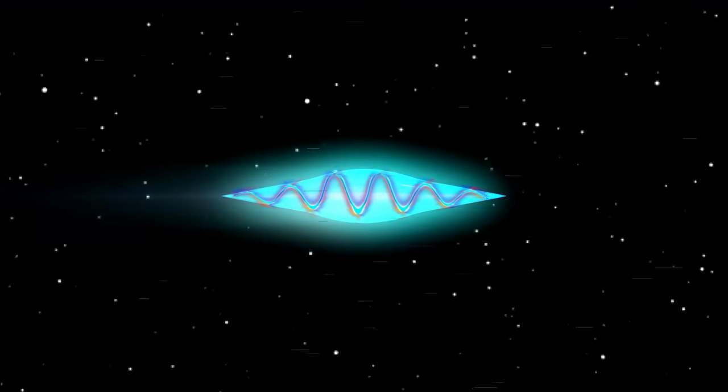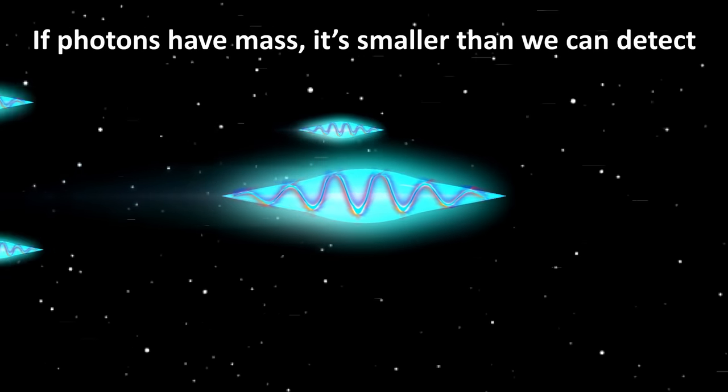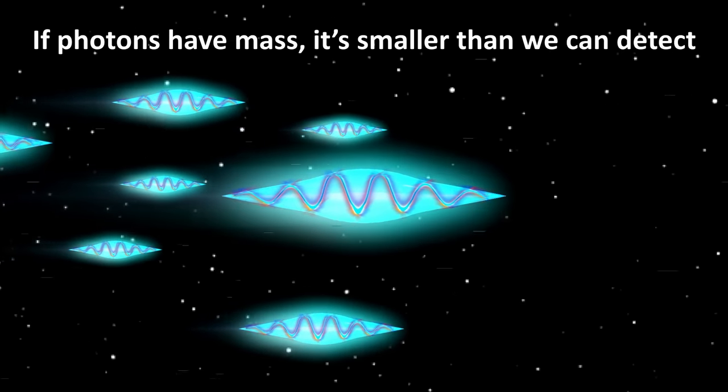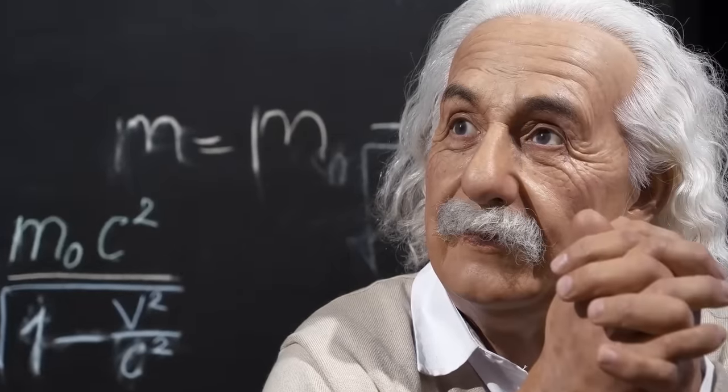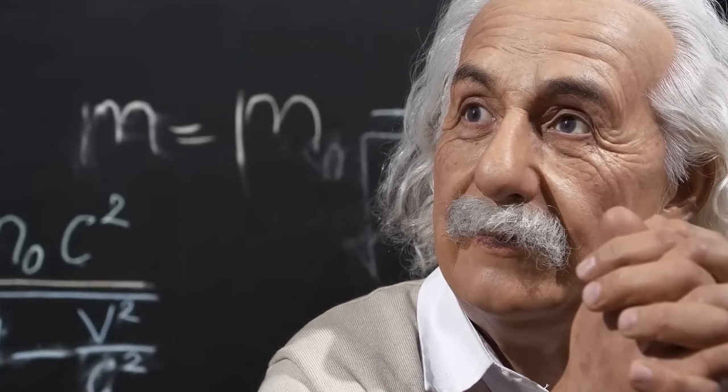In other words, if it has mass, that mass is smaller than our experiments can detect. I have a link in the description if you want to know where this number comes from. Our theories tell us that it should be massless, but there is nothing else we can measure which could be faster.